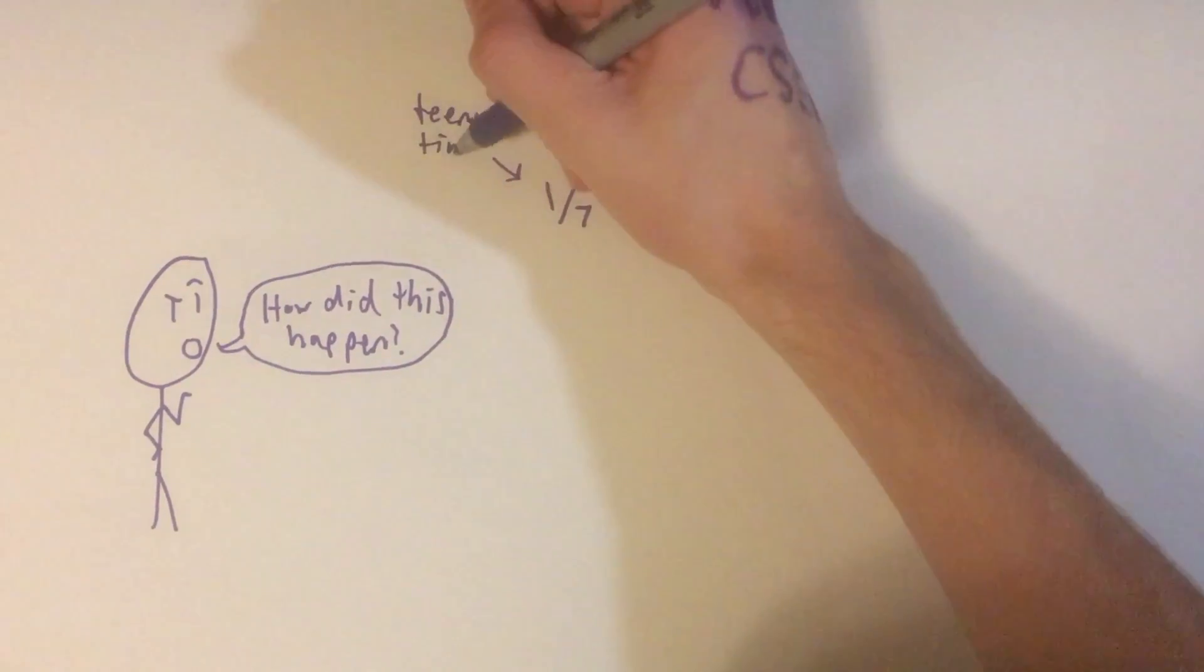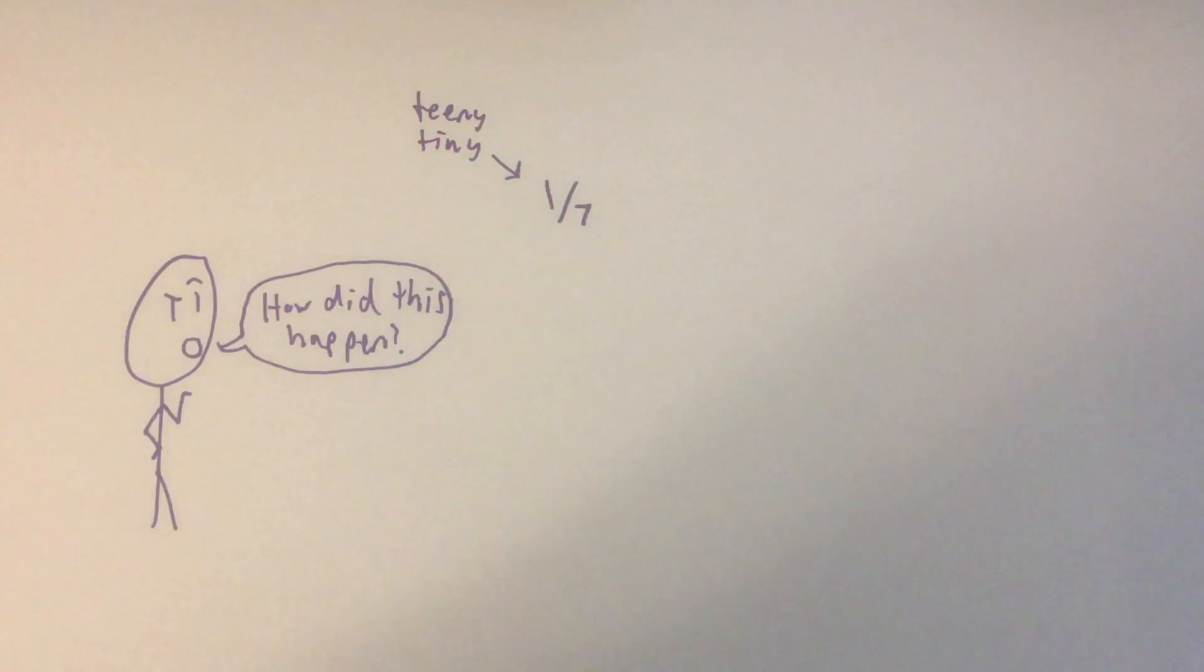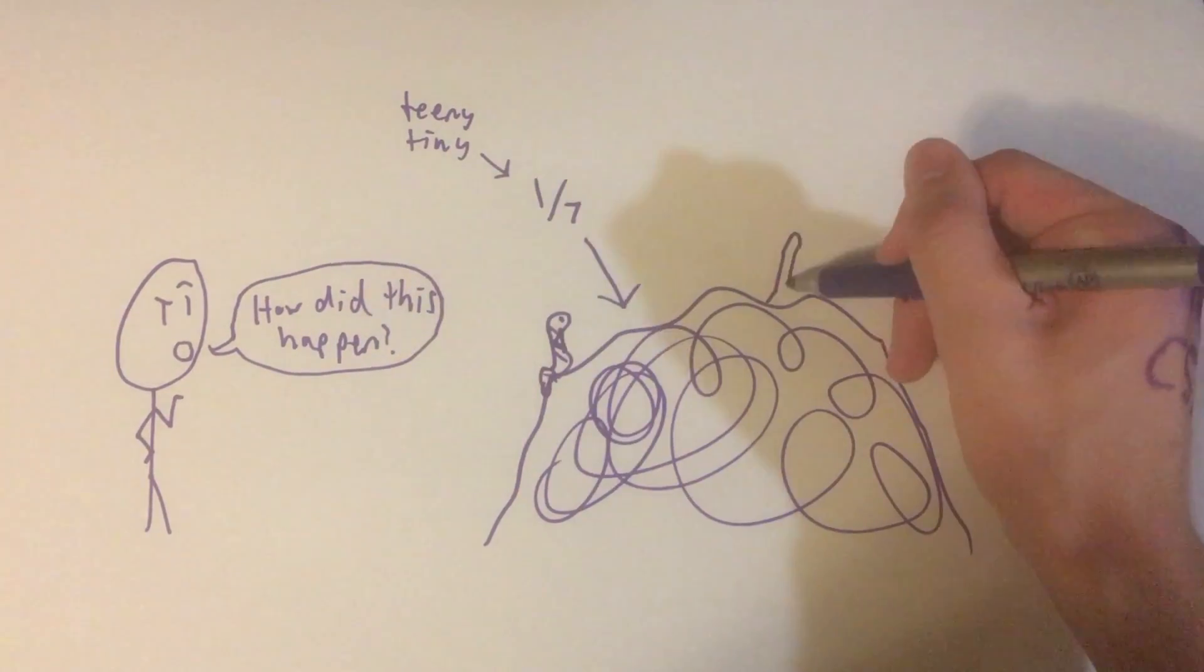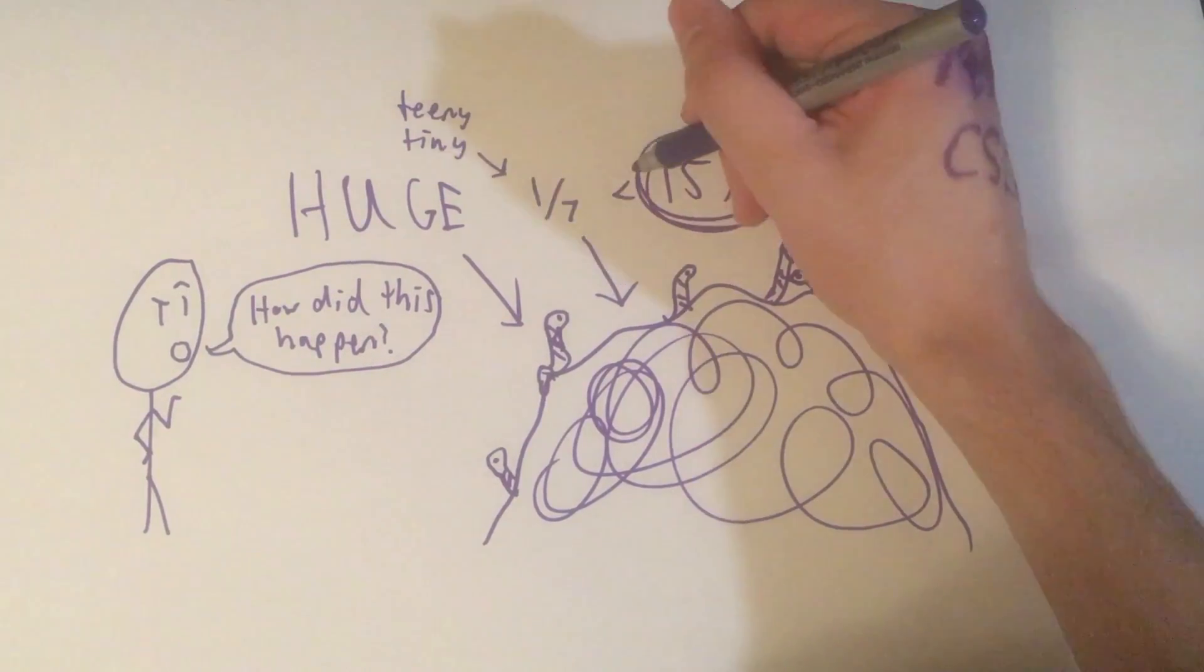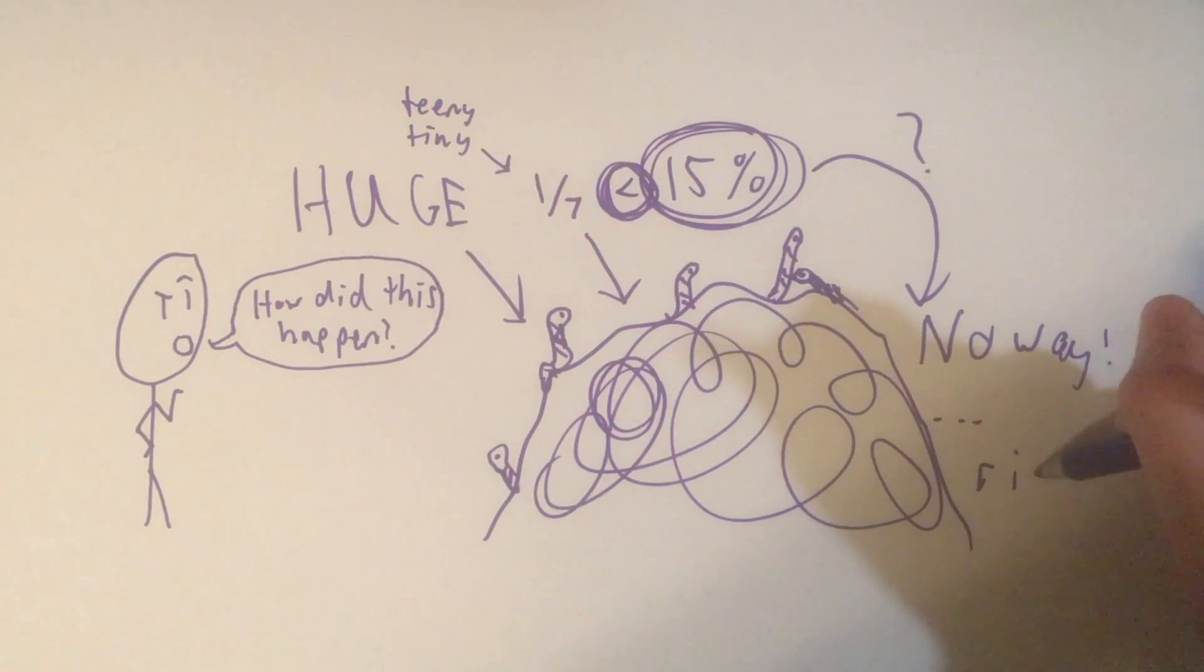But wait, how did this happen? Wasn't there only a 1 in 7 chance that the worm would create an extra copy of itself? How could the worm multiply this much if the chance for it to be installed a second time was less than 15%? There's no way it could have done that much damage, right?